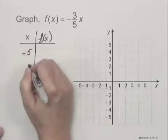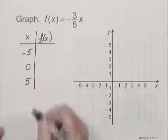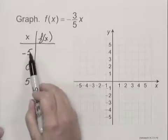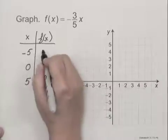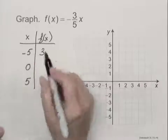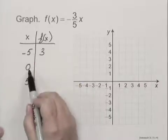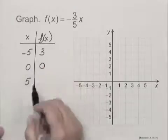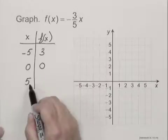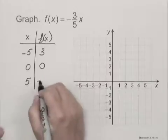So we'll choose negative five, zero, and five. f of negative five is negative three fifths times negative five which is positive three. f of zero is negative three fifths times zero which is zero. And f of five is negative three fifths times five which is negative three.